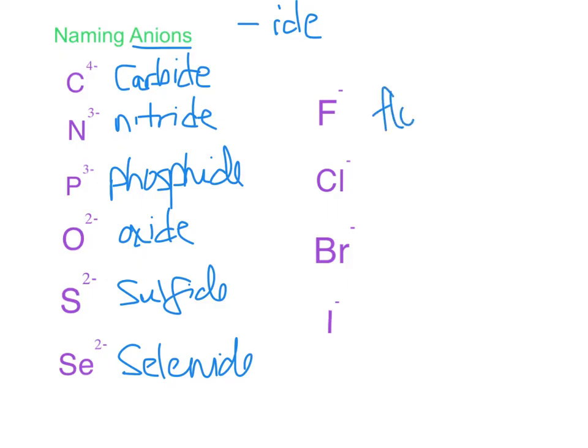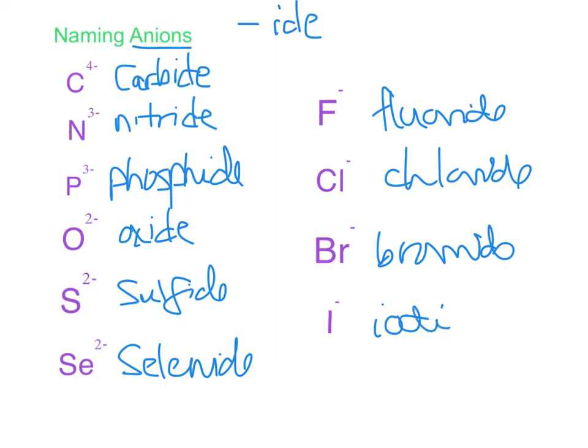Fluoride. Chloride. Bromide. And iodide. So that's how we figure out what ions they form and how to name them. And then we'll see what to do with them next.